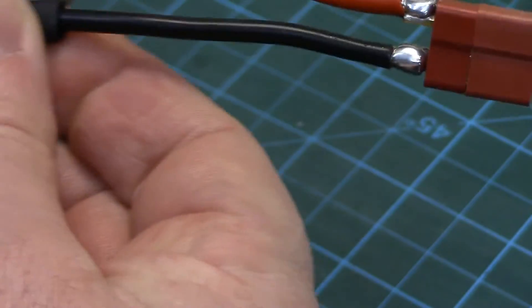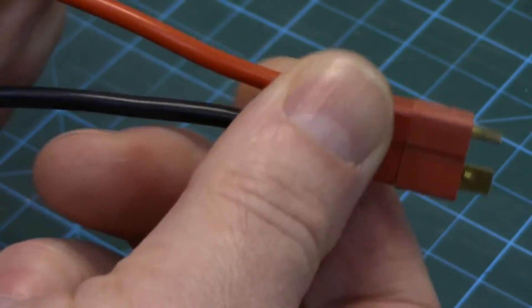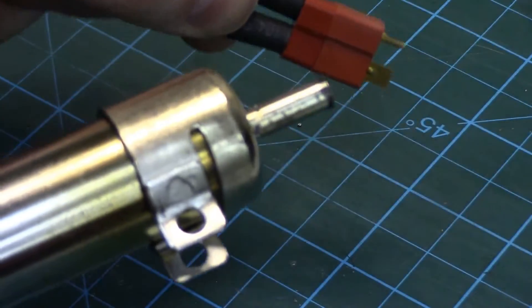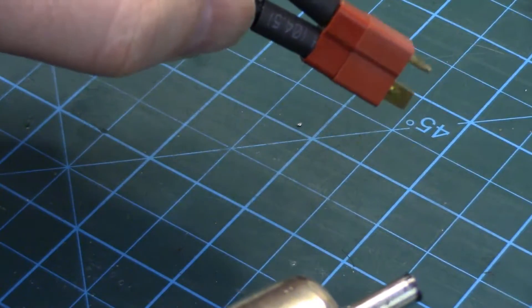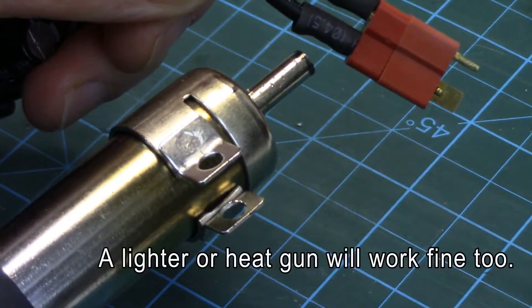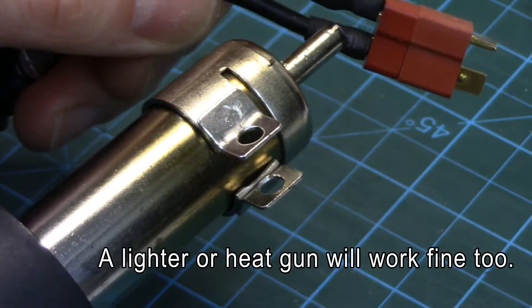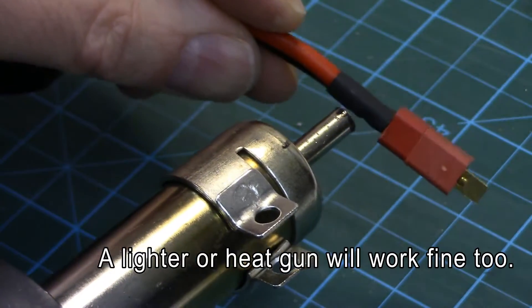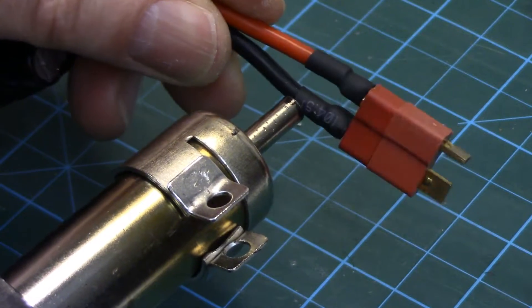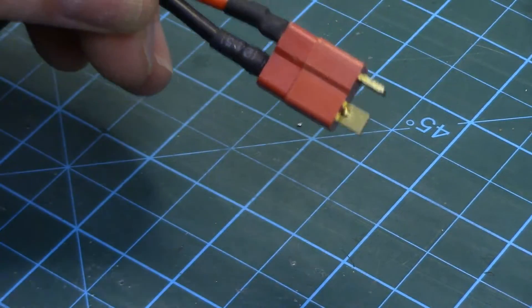So we'll just slide the heat shrink over top, just using my rework wand, I've got this set to about 230 celsius, just enough to shrink the shrink tube. And that's it.